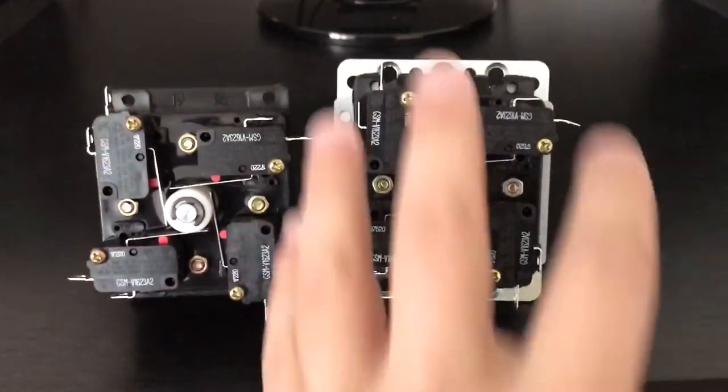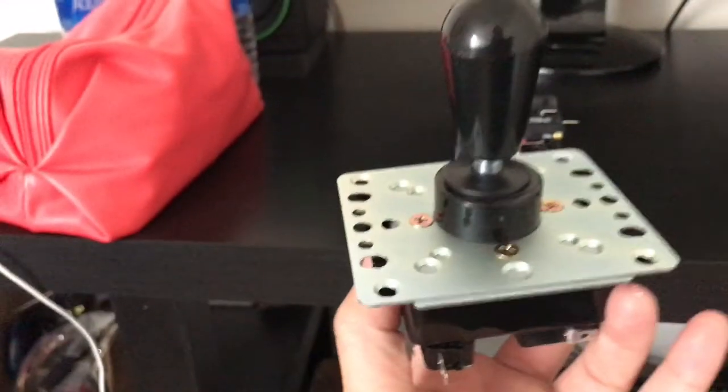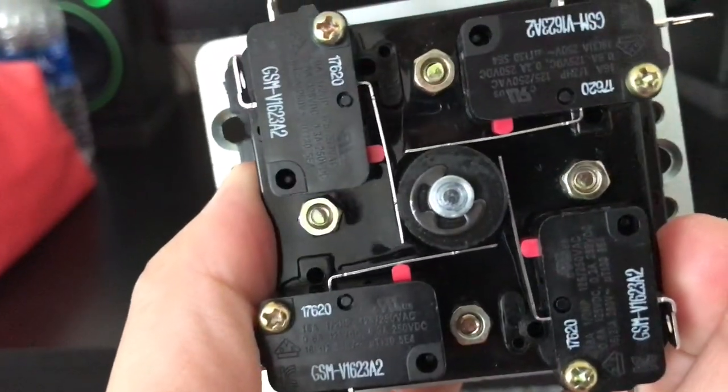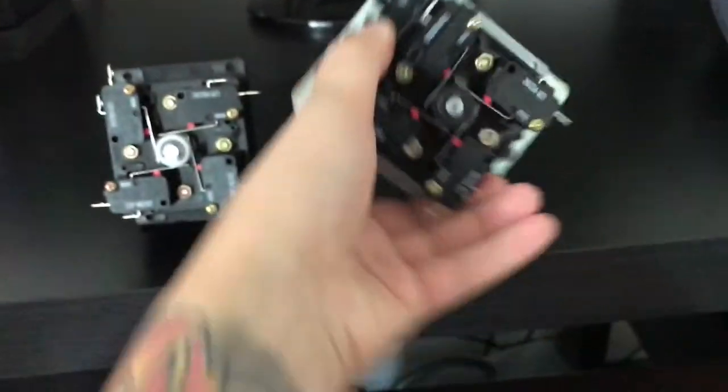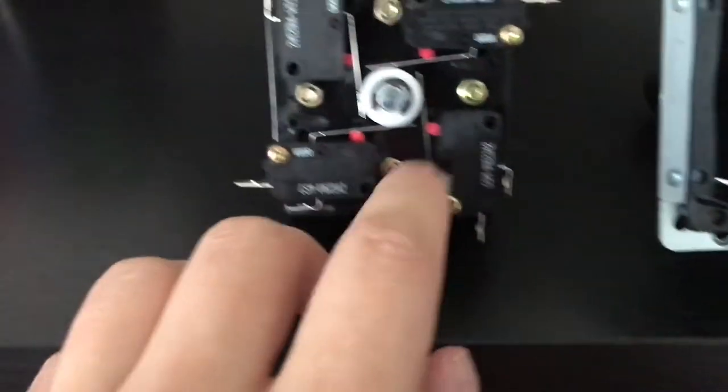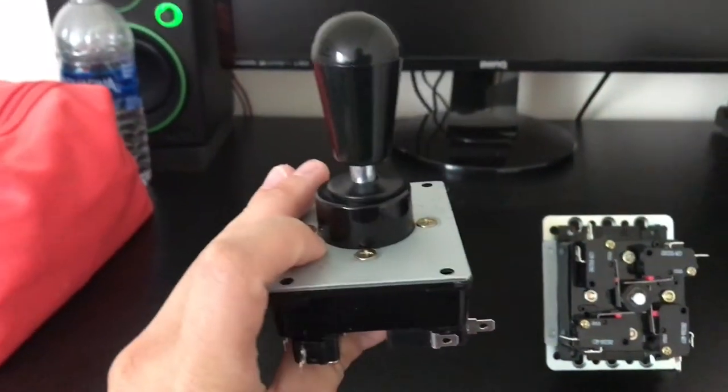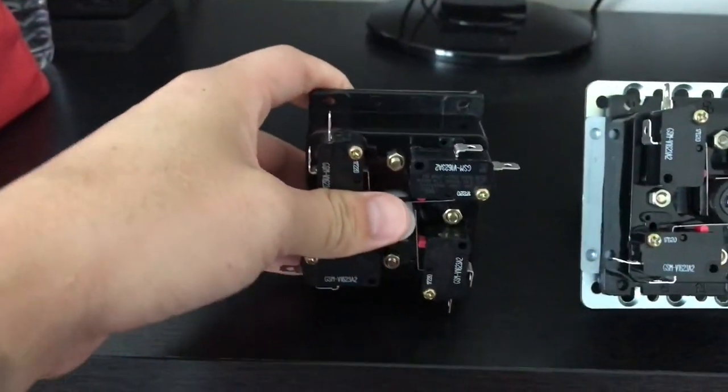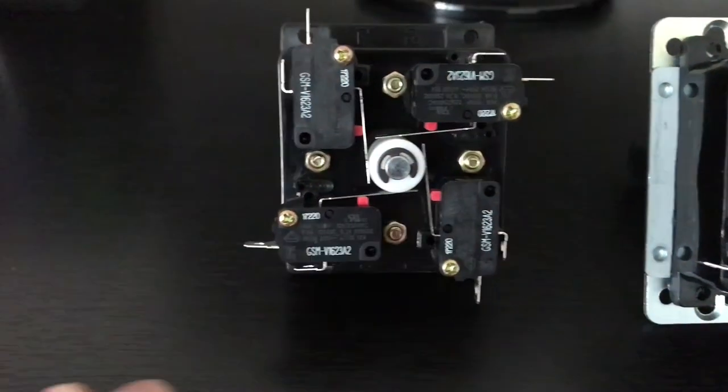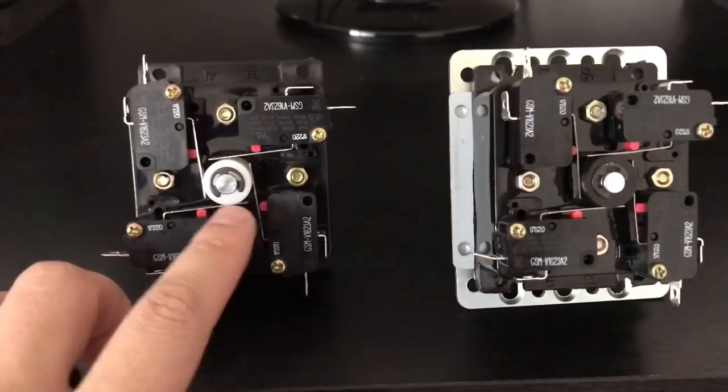Alright, so this one is a Fanta bought from Focus Attack. It came with the black actuator, and actuator is this piece here. This is the one I bought from makestick.com from Korea, and it came with a white actuator.